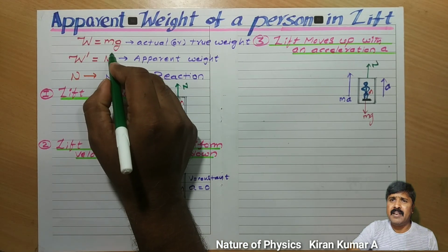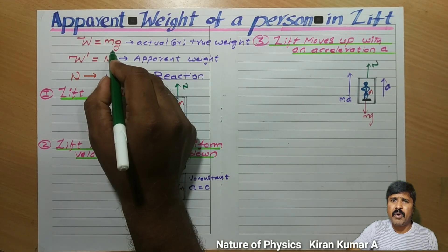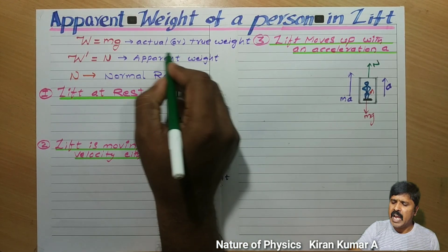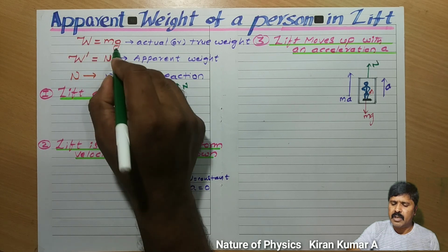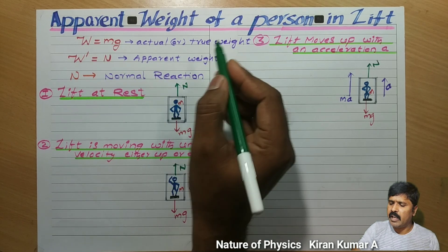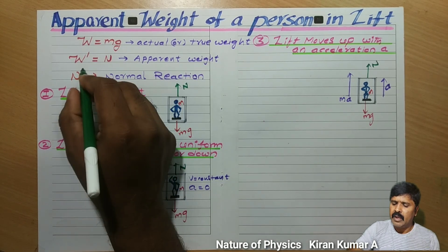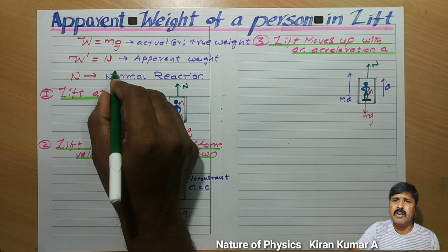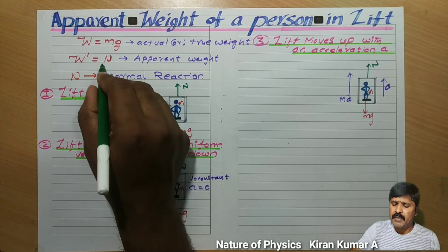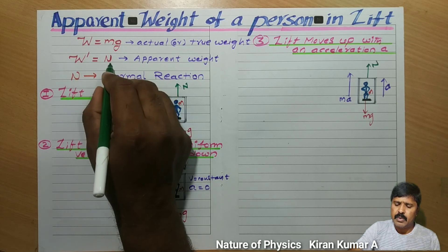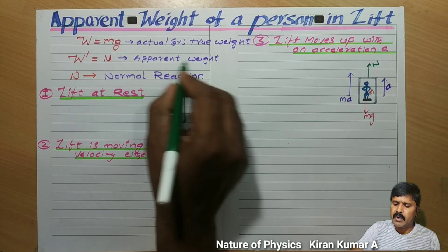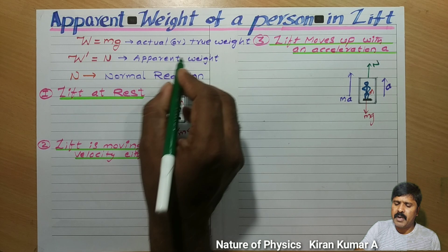Here, W represents the weight of the body — that is, the actual weight, represented by Mg. So W is equal to Mg. Next, W dash is equal to apparent weight, that is N. So W dash is equal to N is the apparent weight.